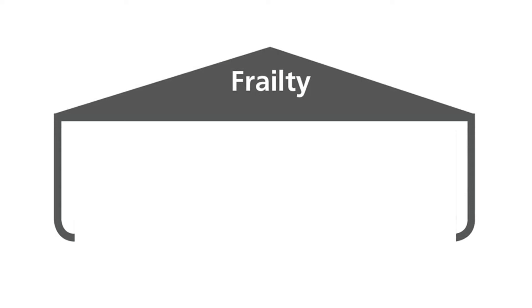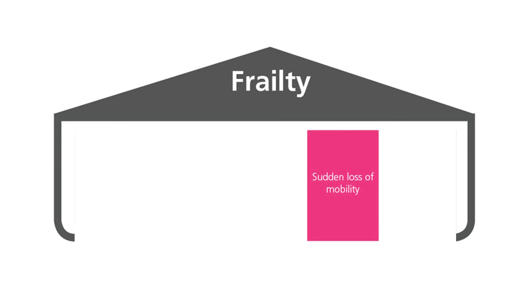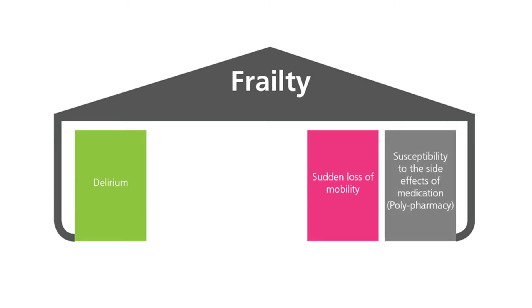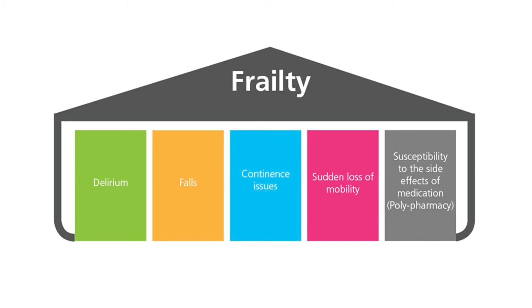The second way that we can recognize an older person that is becoming frail is when a patient is presenting with one or more of the frailty syndromes. The five frailty syndromes are: loss of mobility, a new acute confusion (i.e. delirium), becoming more susceptible to medications (i.e. polypharmacy), a loss of continence, and incontinence.